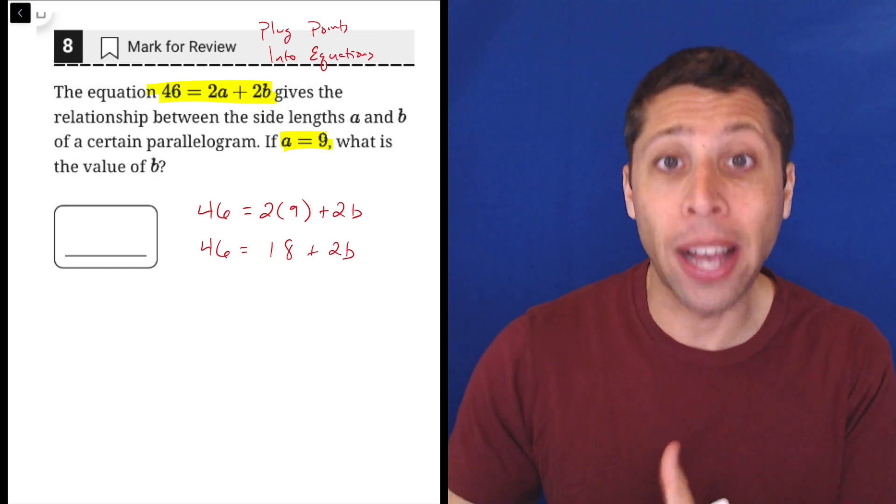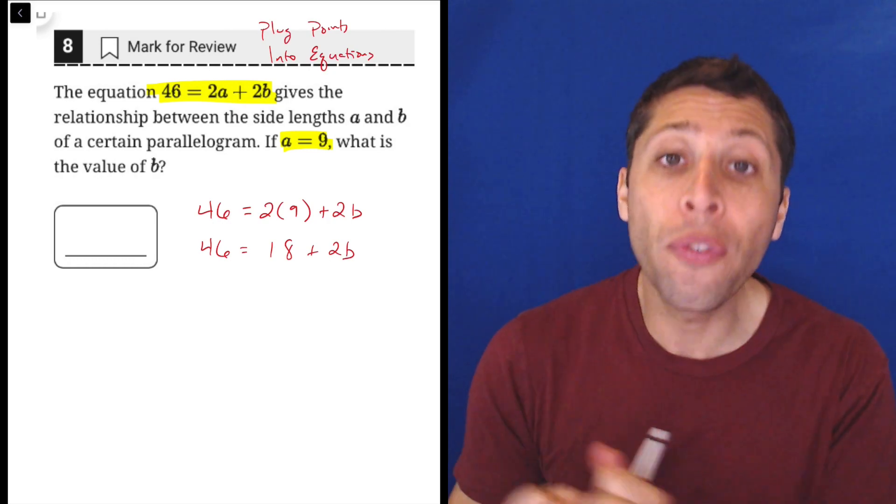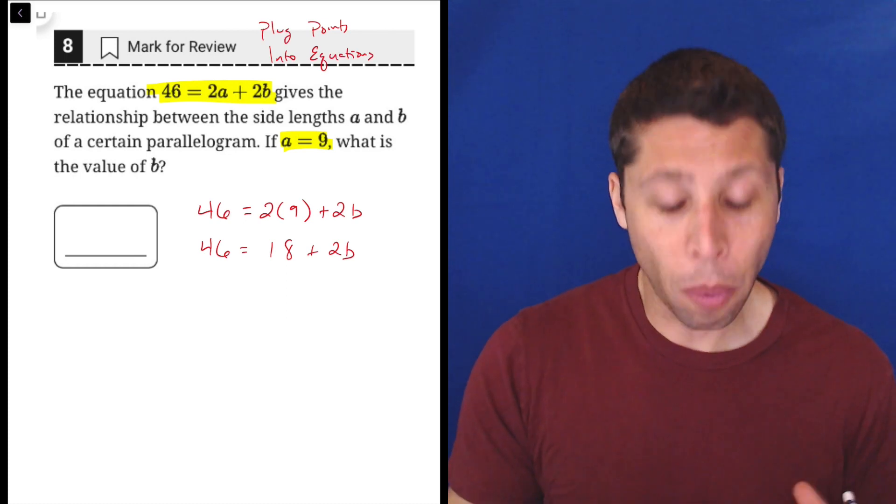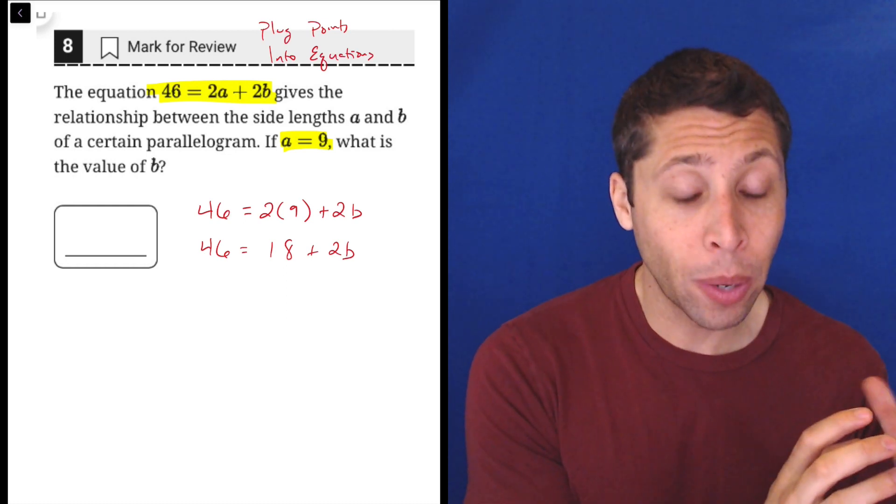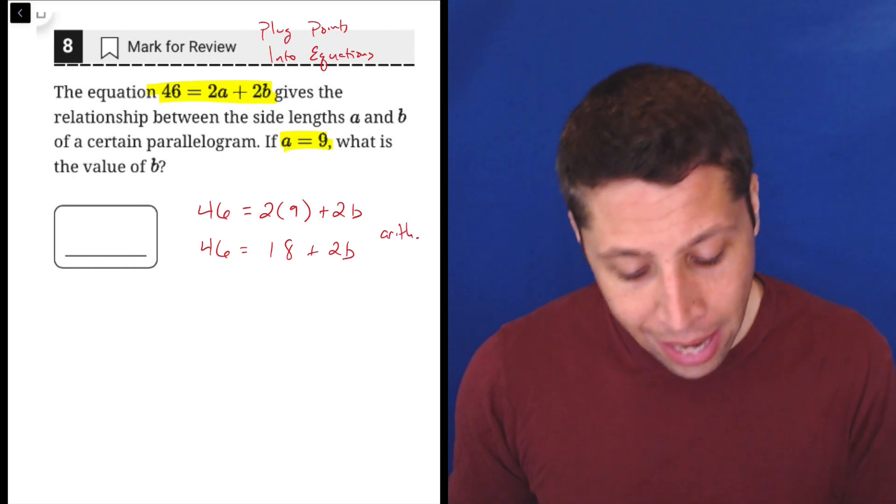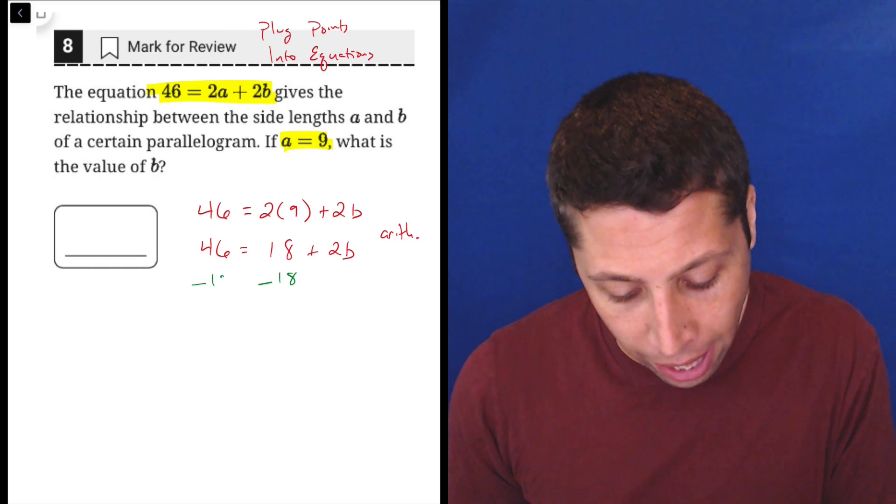And this is where algebra itself actually takes over, where we need to move things away from our variable and get the variable alone. So when we do work on just one side of an equation, that's arithmetic. That's what this step was right here. But now we're going to subtract 18 from both sides.